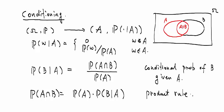You can see these two lines are exactly the same. This is the definition of the conditional probability, and this is called the product rule of how you go back and forth between these two probability models, the original one and the one condition on event A.